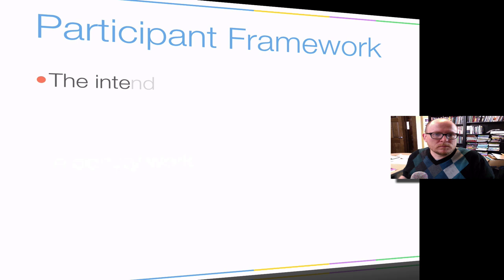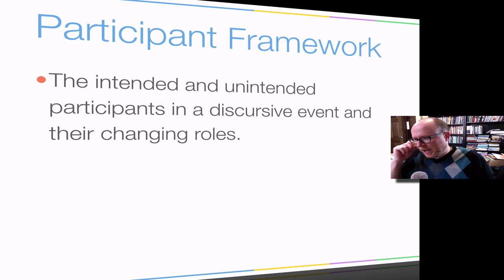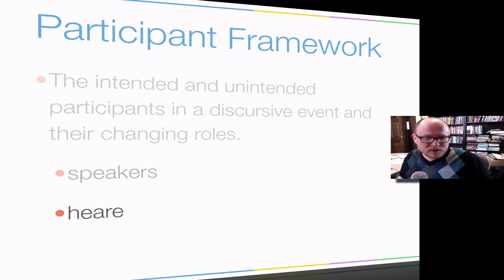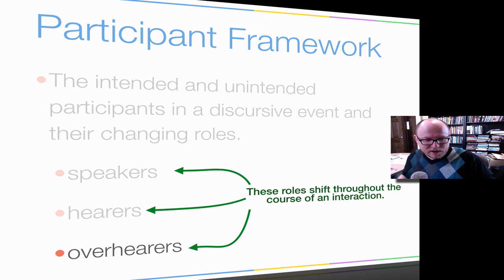Finally, I want to talk about participant frameworks. This is Goffman's understanding of the intended and unintended participants in a discursive event and their changing roles. There are three basic roles: there's the speakers, there's the hearers, and then there's the overhearers — people who are intended to be part of the discourse, and then people who are not necessarily intended to be part of the discourse. These roles can shift throughout the course of an interaction — speakers can become hearers, hearers can become speakers, overhearers can then become speakers who then become hearers. So you can kind of shift around within an interaction.